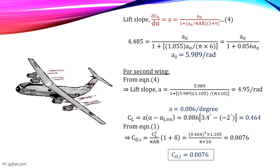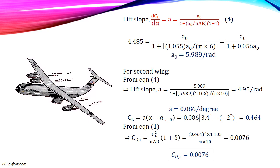The lift slope for the airfoil can be obtained from Prandtl's lifting line theory. We can write a equals a0 divided by 1 plus a0 divided by pi times AR times 1 plus tau.